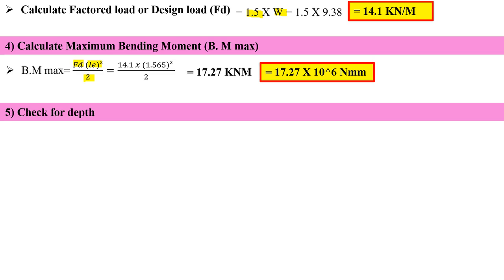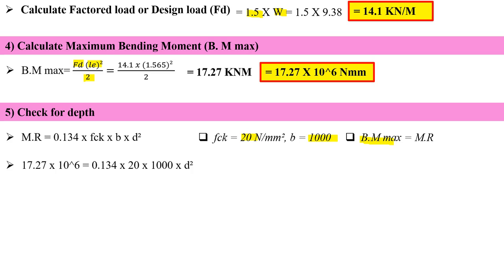Now check for depth. I'm using the formula MR equals 0.134 FCK into BD square. Where FCK is grade of concrete, 20. B is 1000 mm and MR equals BM max. Just put the values in the formula.